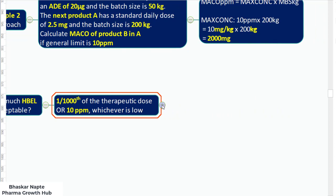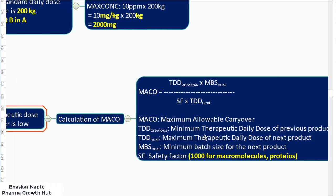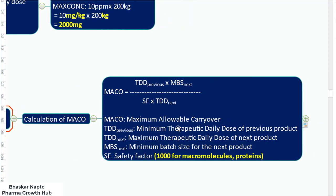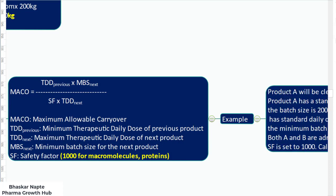The MACO calculation formula for therapeutic daily dose is: MACO = (TDD previous × MBS next) / (safety factor × TDD next). Here, TDD previous is the therapeutic daily dose of the previous product, MBS next is the minimum batch size of the next product, and for macromolecules and proteins the safety factor becomes 1000 (i.e., one-thousandth). TDD next is the therapeutic daily dose of the next product.